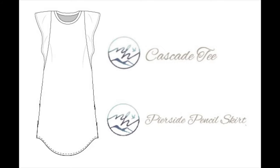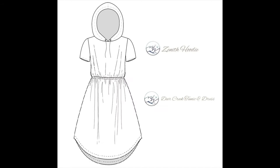There are nearly an infinite number of new patterns that you can make by mashing together elements from patterns that you love. Here are some ideas to get you started: the Marbella top with the Bourbon Street skirt, the Cascade tee with the Pearside pencil skirt, the Dublin Dolman with the Knoxville knot, the Maui tank top with the Bayside romper shorts, or the Zenith hoodie with the Deer Creek skirt.